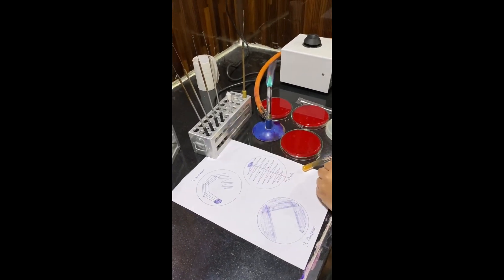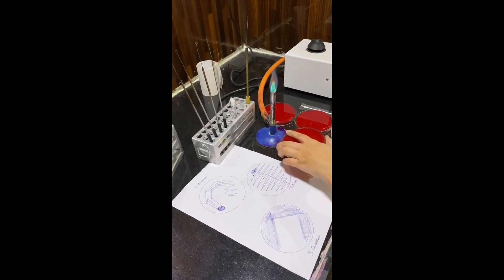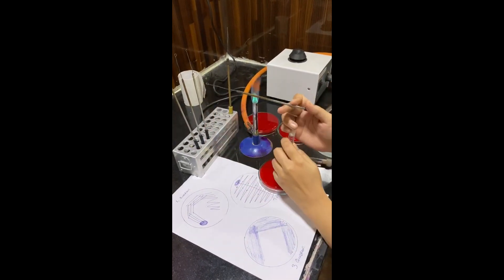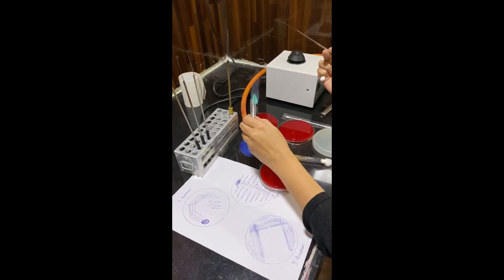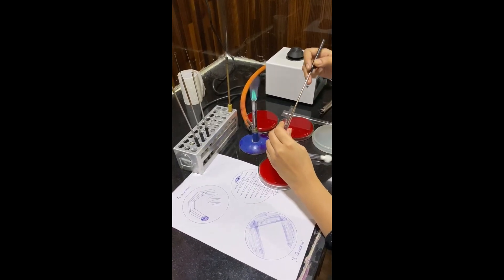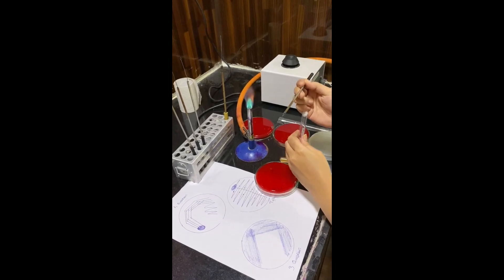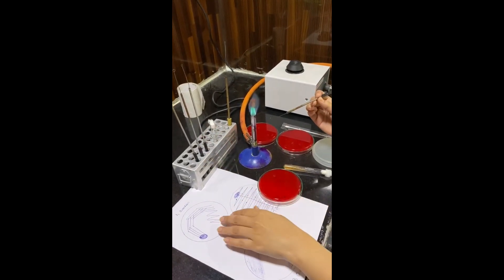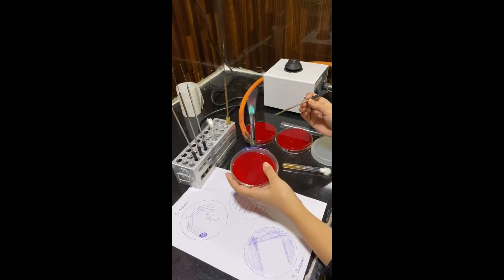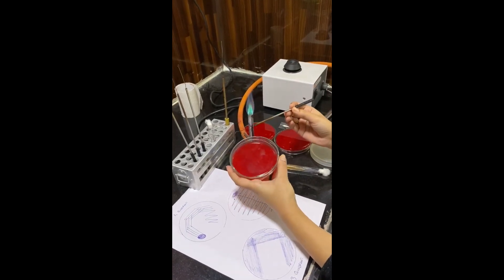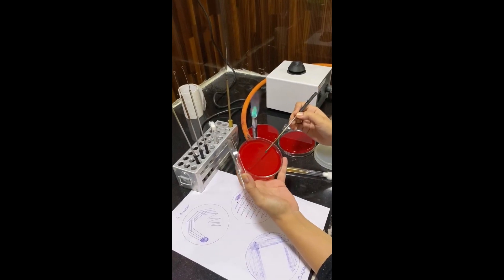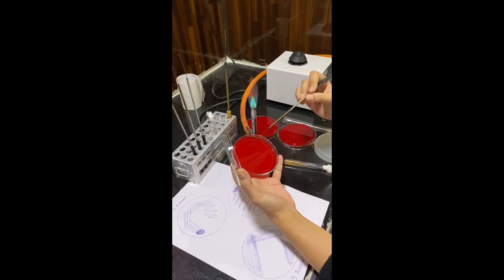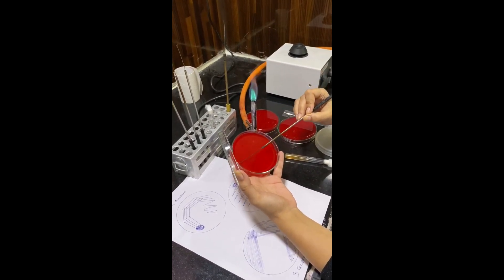I already have my loop sterilized. I will be doing this method on blood agar. The bacterial suspension. A loop full of bacterial inoculation. So in 4 quadrant method, as you can see, a well needs to be drawn. From the well, draw perpendicular lines like this.